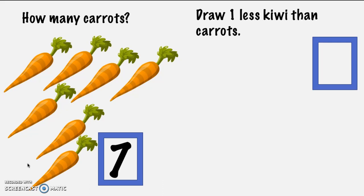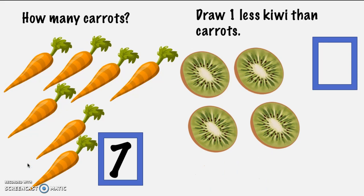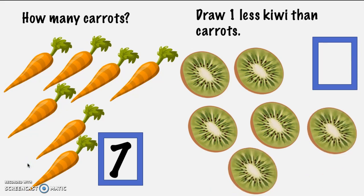Did you draw those good kiwis or circles? You should have one less than seven. This is how I solved it — I drew kiwis until I got to seven and I didn't draw the seventh one; I stopped right before it. One, two, three, four, five, six — no, I don't want to do seven because I know the number right before seven is one less. So how many kiwis do I have, friend? I have six. One, two, three, four, five, six. How did you do? You have six as well? Excellent job.